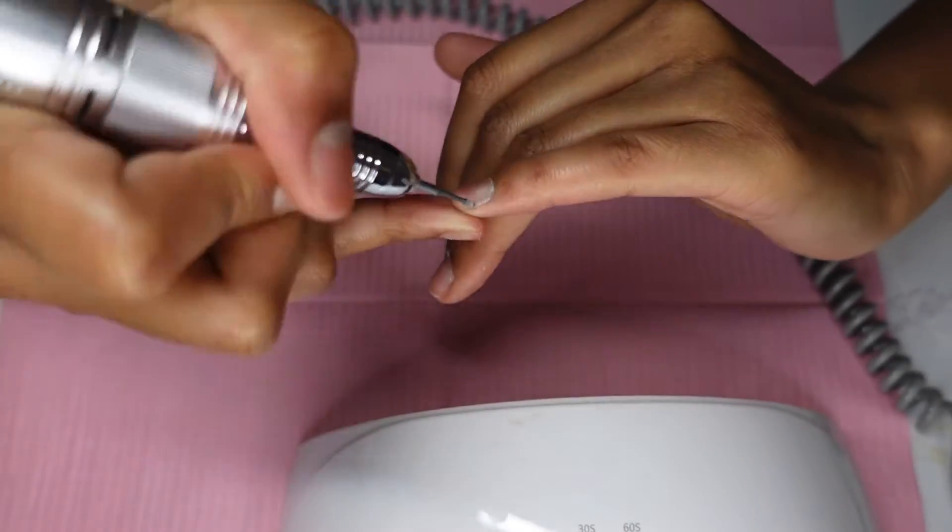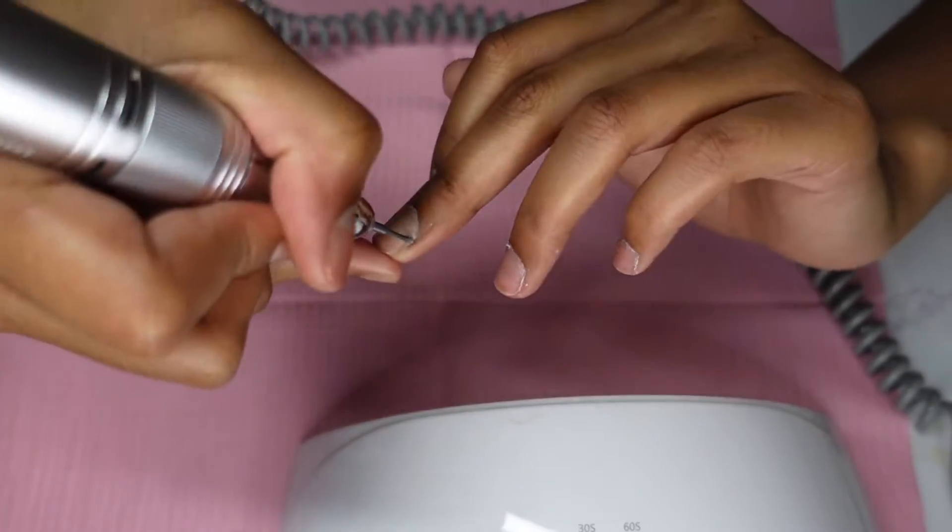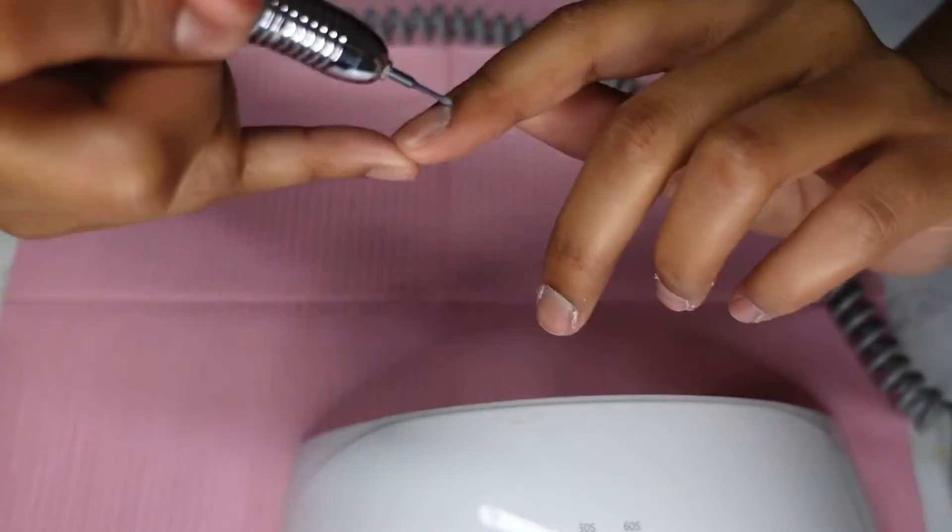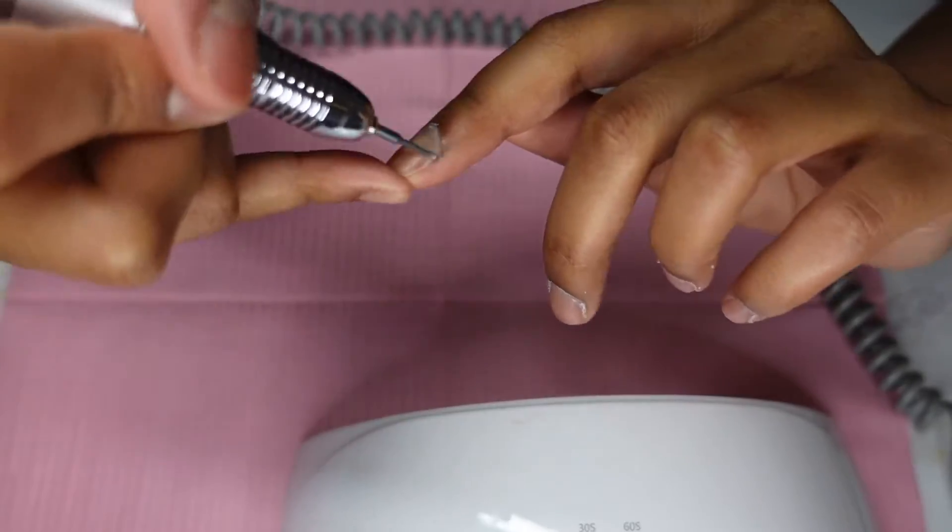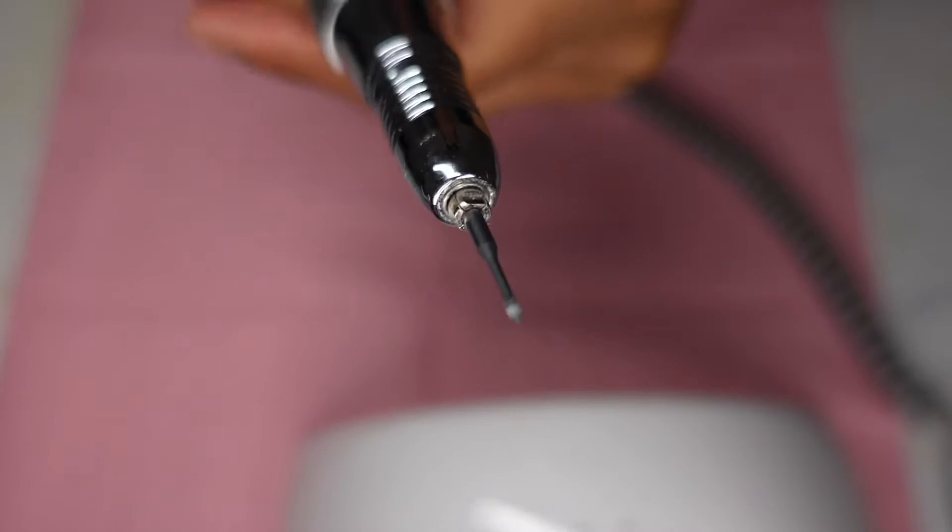Right here you'll see me going back in the opposite direction. This is just to make sure that the cuticles are really clean on both sides to make sure my cuticle bead application doesn't give me any problems.